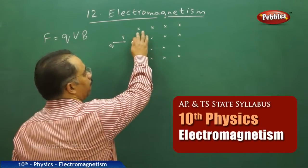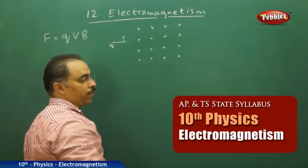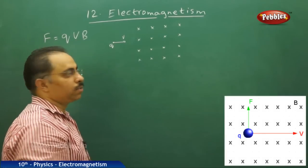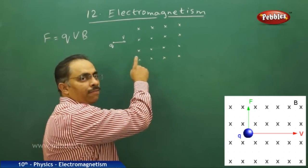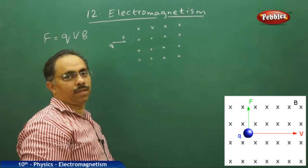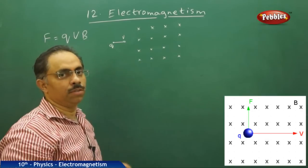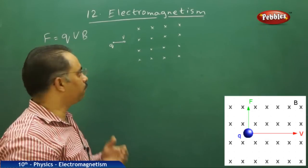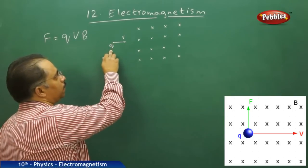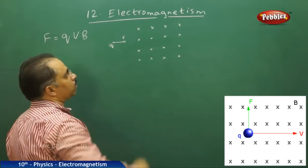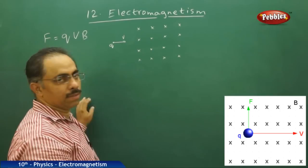We assume that the magnetic field is going into the board. The crosses indicate that the direction of the magnetic field is going into the board — that means it is perpendicular to the plane of the board. I am taking a charged particle Q and forcing it to pass through the magnetic field of induction B.